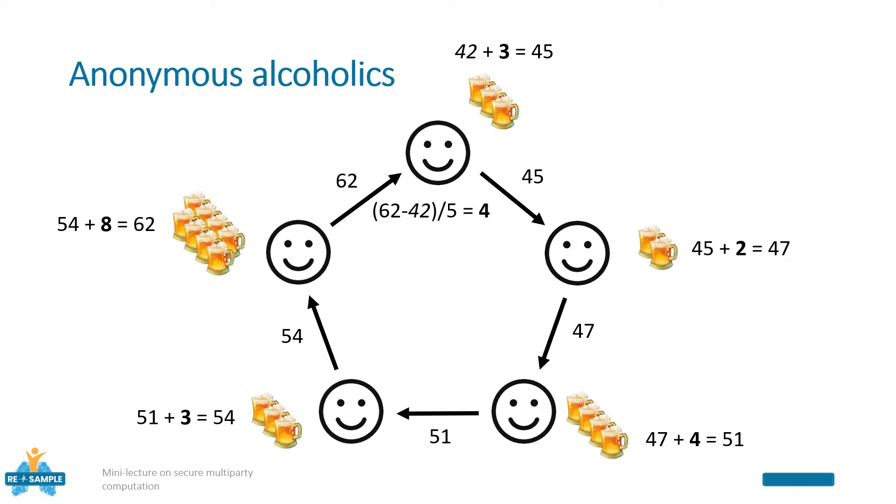Now he can just remove the random value 42 and retrieves the sum of all the beers drunk. Then he can divide this value by the total number of participants, get the average value, and broadcast it to the others. In this way we were able to compute the average without leaking the number of beers of each participant.